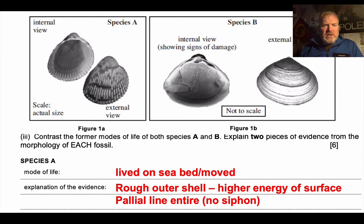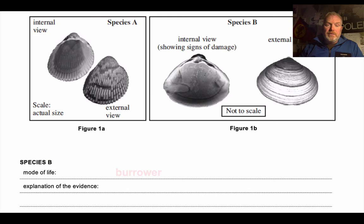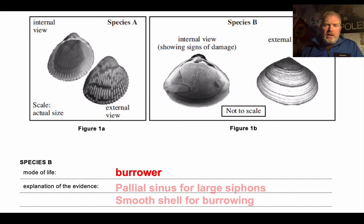We also see a palleal line that just goes straight from muscle to muscle — there's no siphon, no palleal sinus. This indicates it must live near the surface of the seabed. Species B, on the other hand, is very clearly a burrower, and there's some distinct evidence for this.